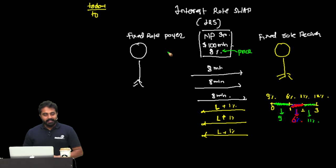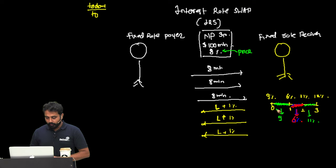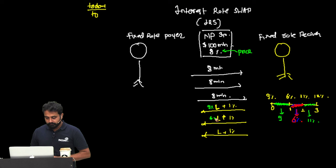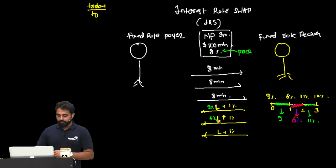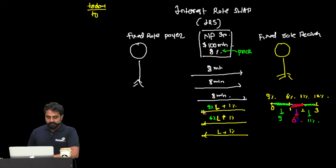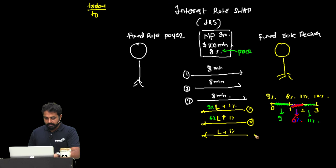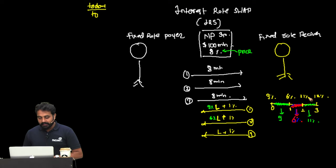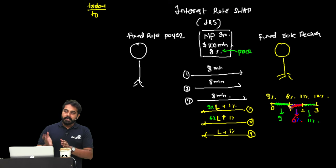Here is how we do the math. In year 1, the fixed rate payer will pay 8 million and receive LIBOR of 9%, so they receive 10 million. In year 2, instead of LIBOR we insert 6% — but here is where people have confusion. If you ask for the second year payment, you might look at the second year rate of 11%, but that would be a mistake. You cannot use the second year rate; you must use the rate from one period earlier. The rate applicable from year 1 to year 2 is 6%.